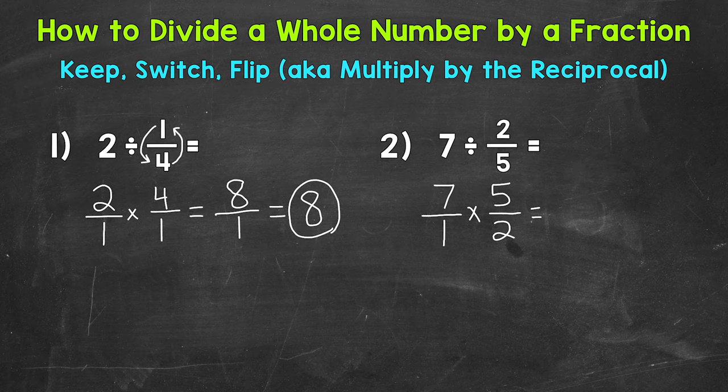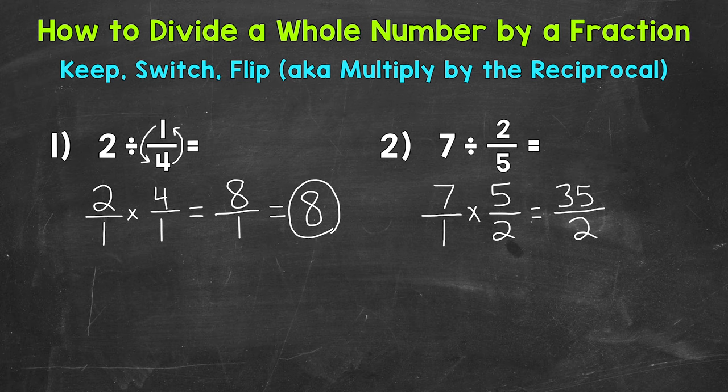Now we can multiply straight across. Seven times five is 35, and one times two equals two. So our answer is 35 over two. Now we don't want to leave it improper. We want to convert this to a mixed number. So we do 35 divided by two.